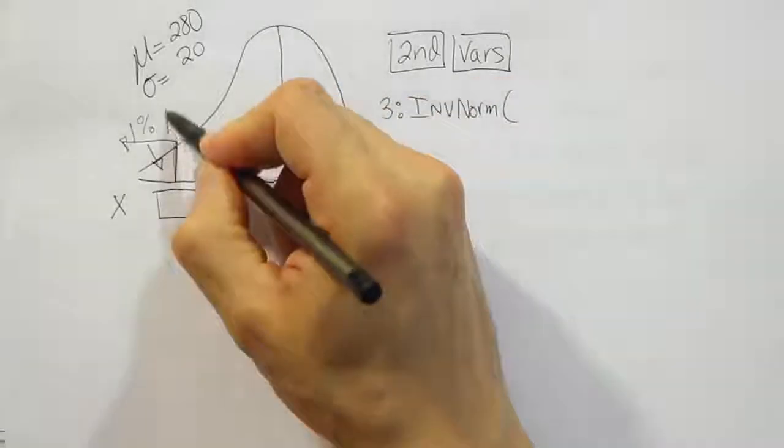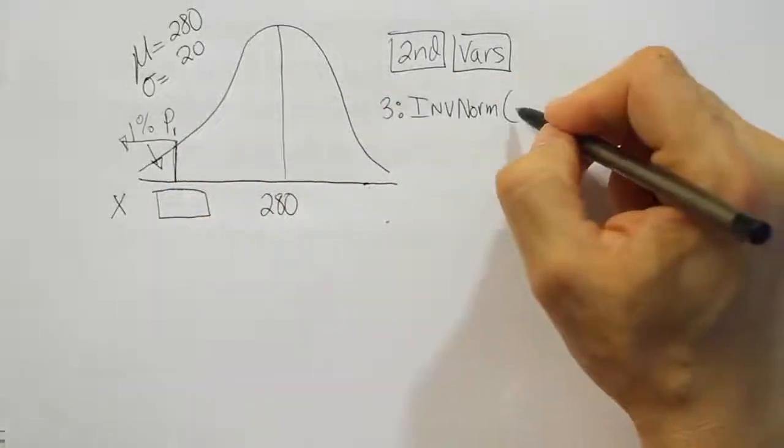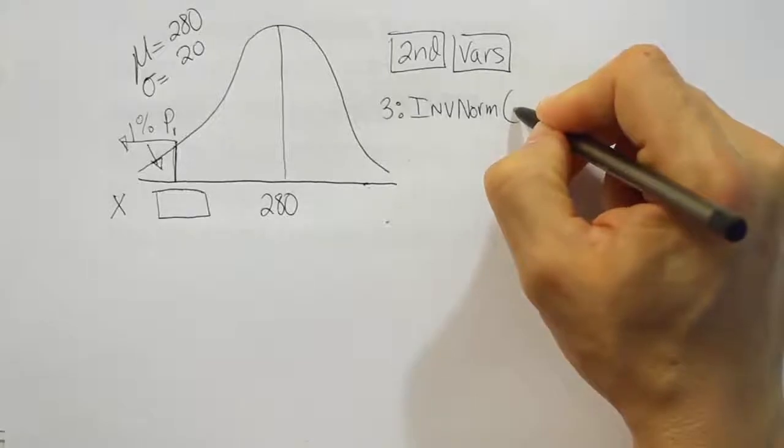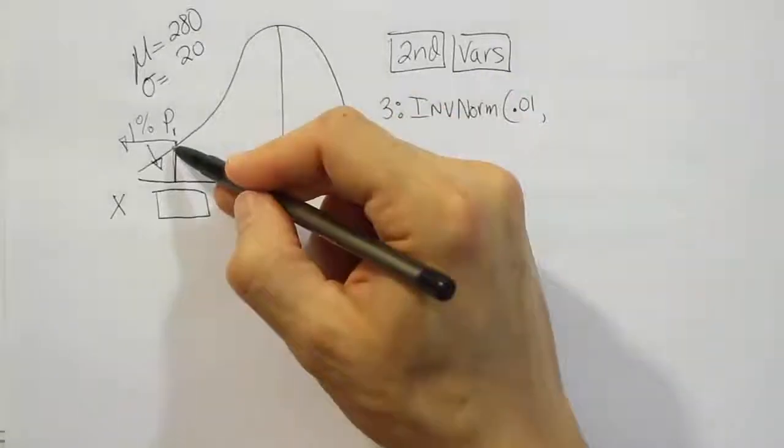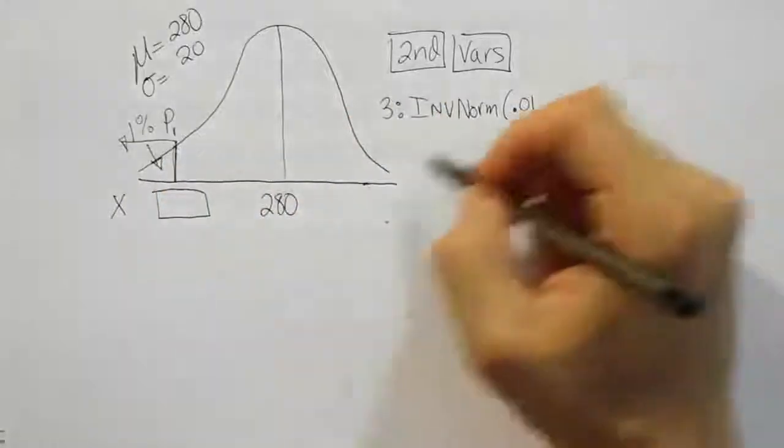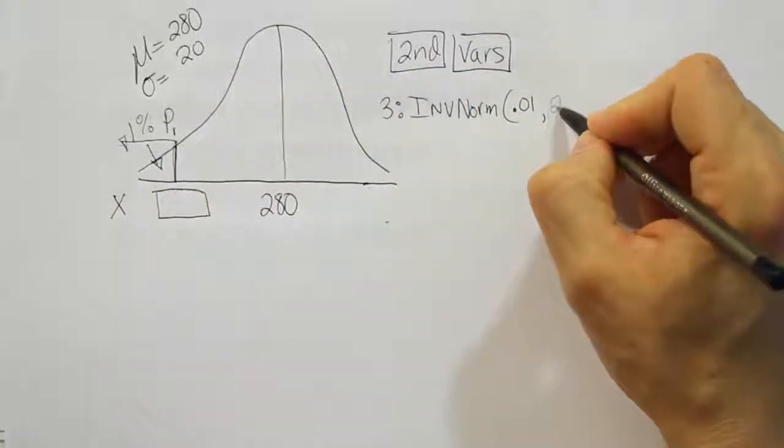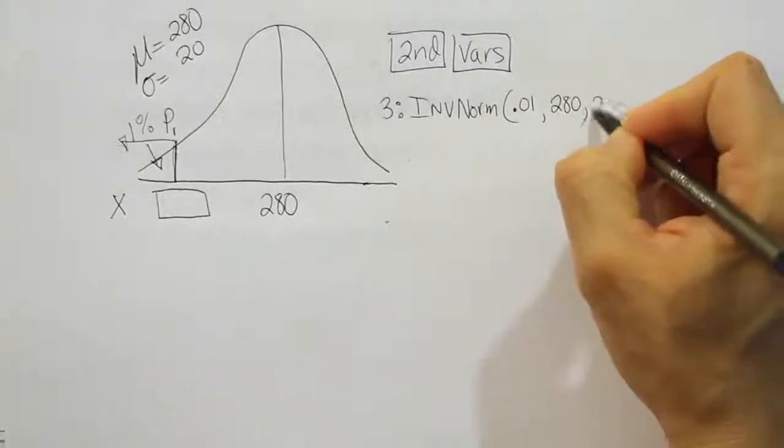Well it turns out here that that's P1 or the first percentile. So I'm going to enter that as a decimal in my calculator as .01 to represent the 1% that's behind that location. And then from there it's just a matter of putting the mean and the standard deviation they gave us. So that's 280 and 20.